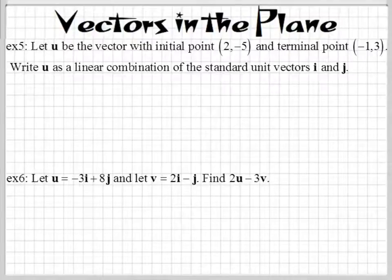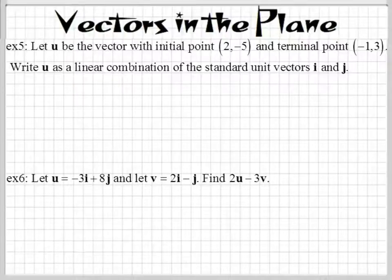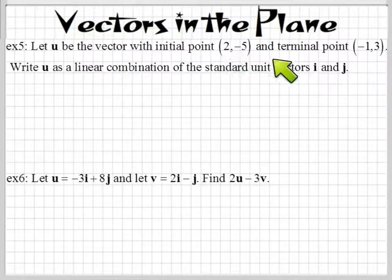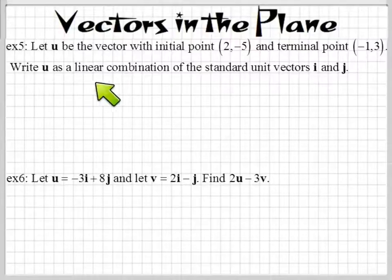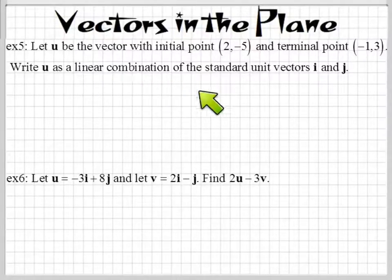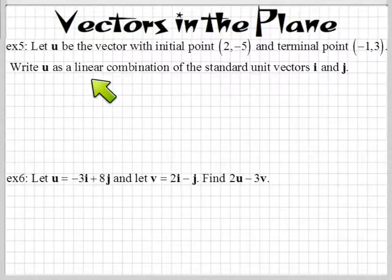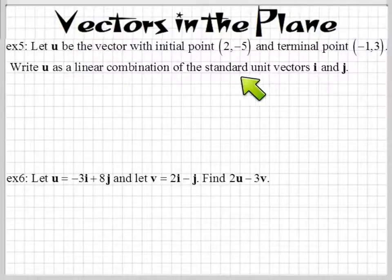Here's an example of evolving unit vectors. Let U be a vector with an initial point and a terminal point. Write U as a linear combination — what the heck is a linear combination? That should have thrown some of you off. If it didn't, then you're a super nerd. Of the standard unit vectors, i and j.